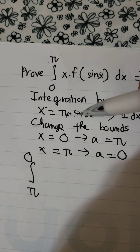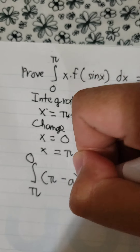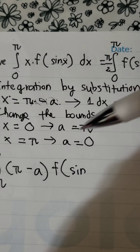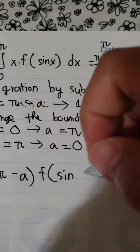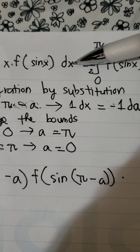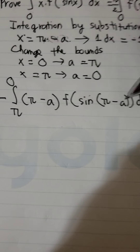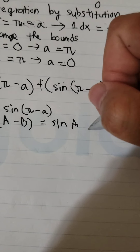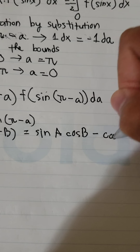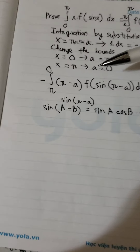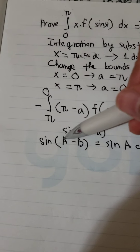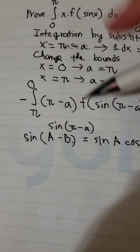For s we substitute B minus a, and for dx we substitute negative da. If you don't know how to convert this, I will write the formula here. Capital A corresponds to small b, and small a corresponds to capital B.